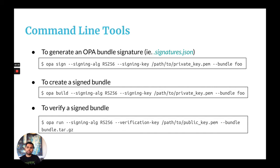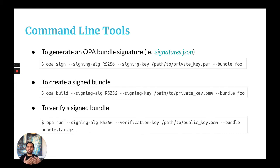We've also provided some command line tooling to help with signed bundles. There's a brand new OPA sign command that you can use to generate signatures for the contents of a given directory or an existing bundle. You provide the signing algorithm — by default RS-256, but HS-256 and others are available — along with the signing key. For asymmetric algorithms, you provide the private key; for symmetric algorithms, you provide a secret. The sign command will generate the signature for all contents of the given directory or bundle.